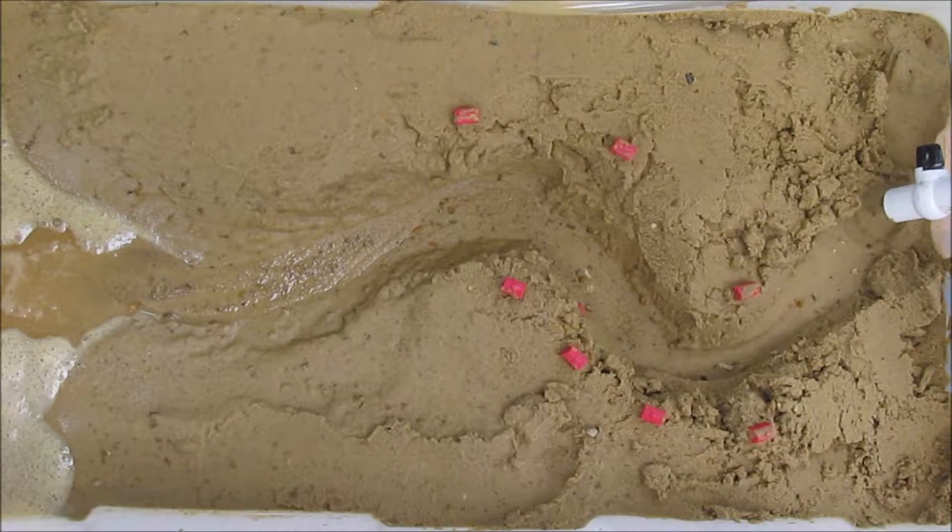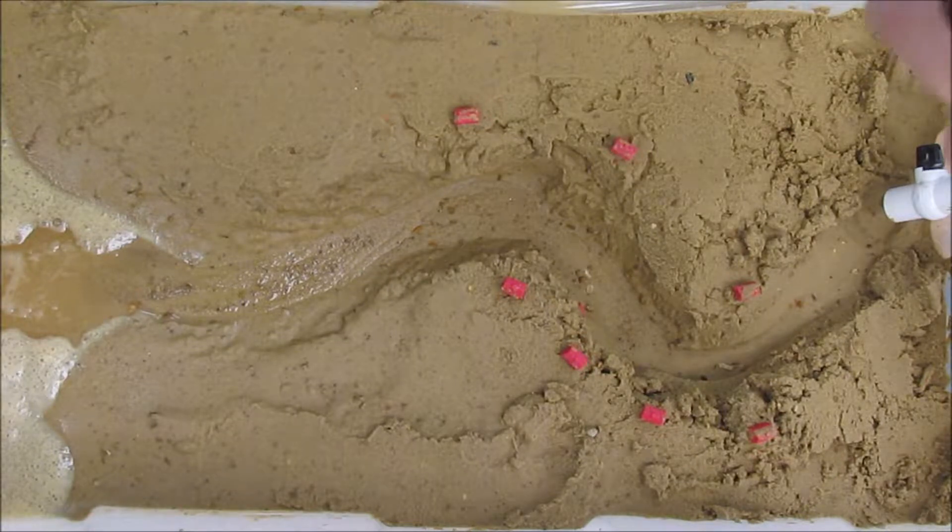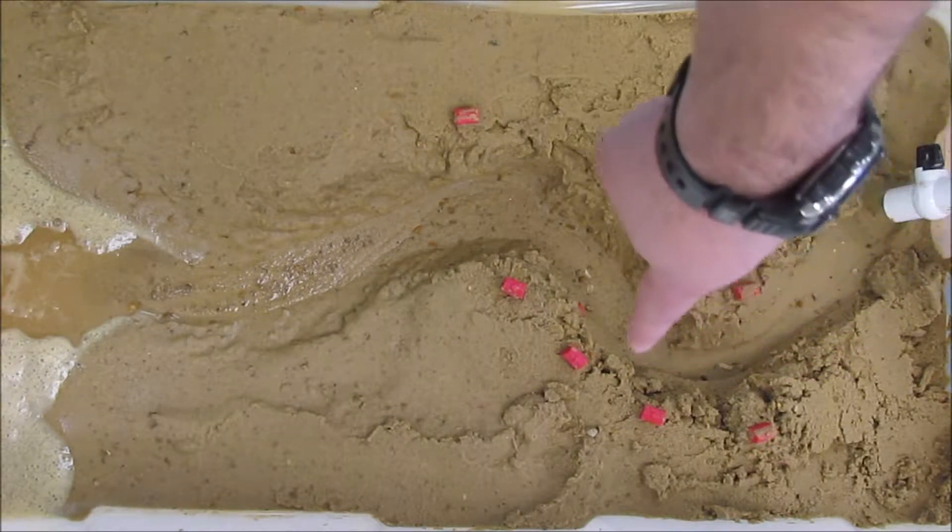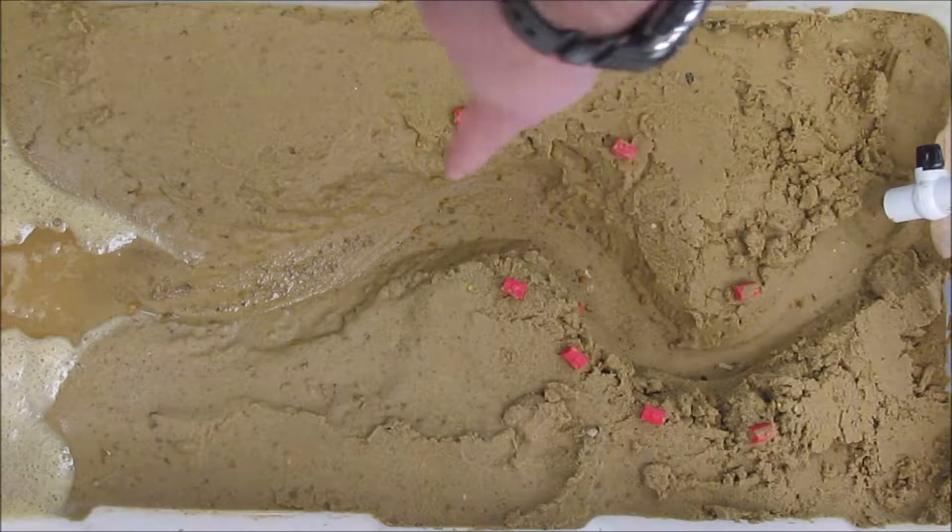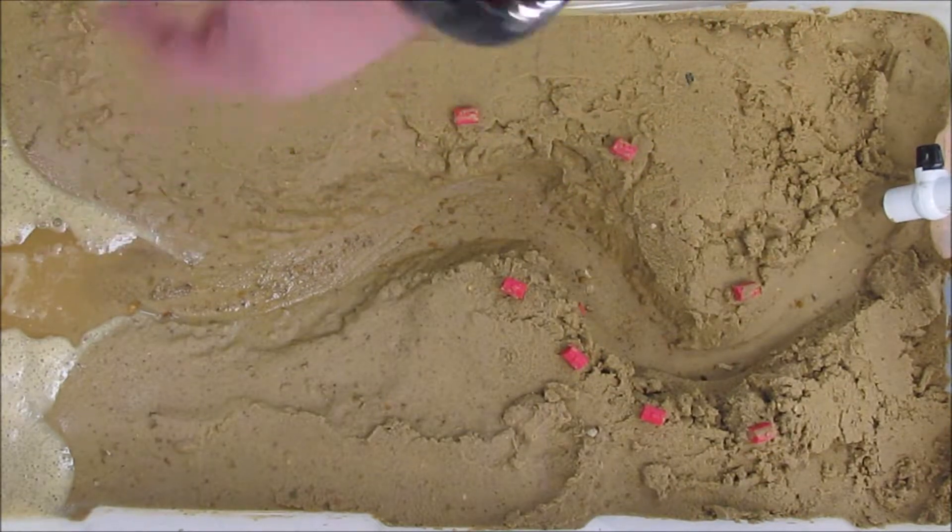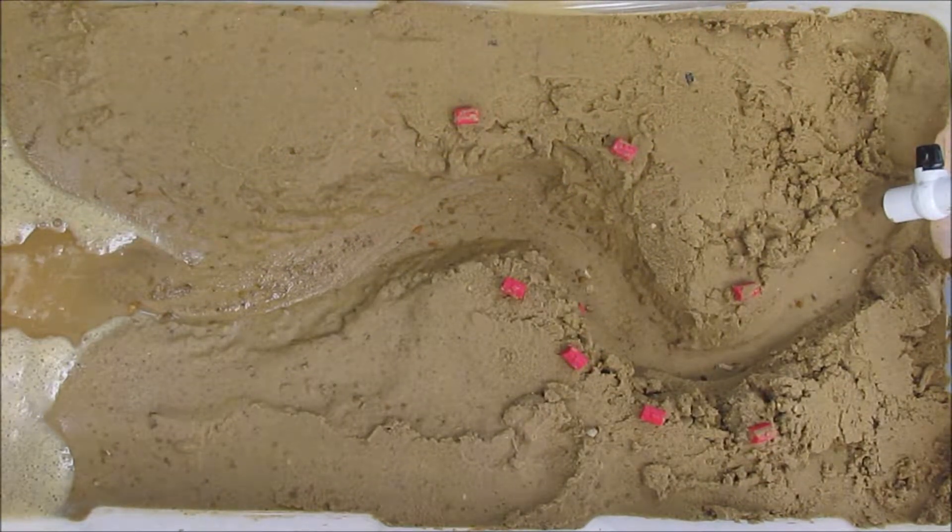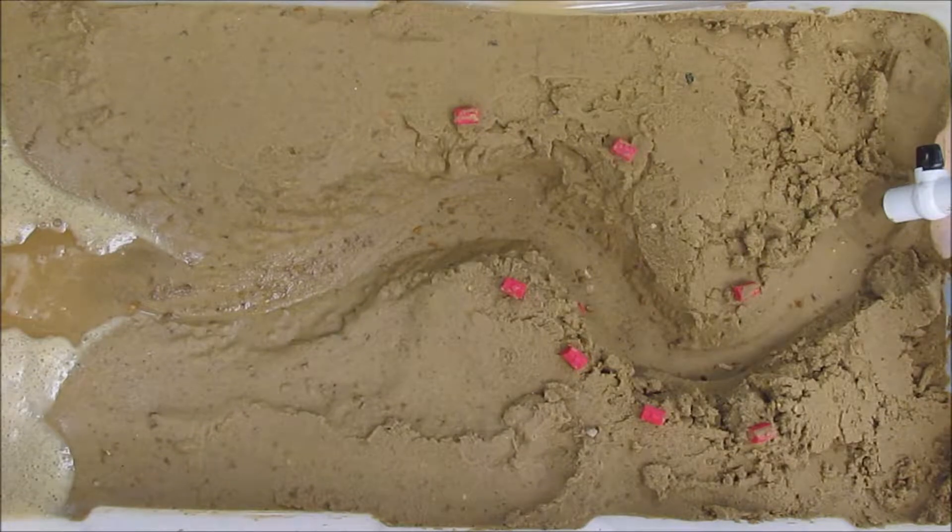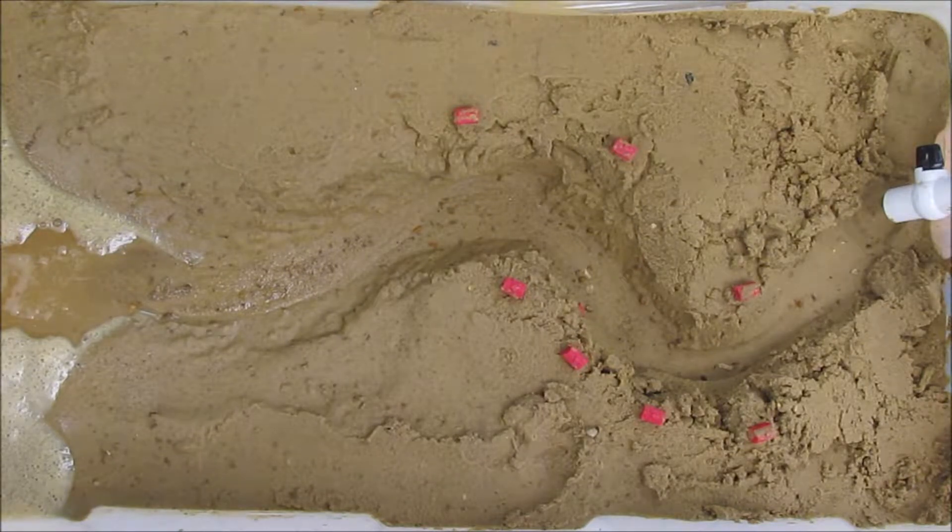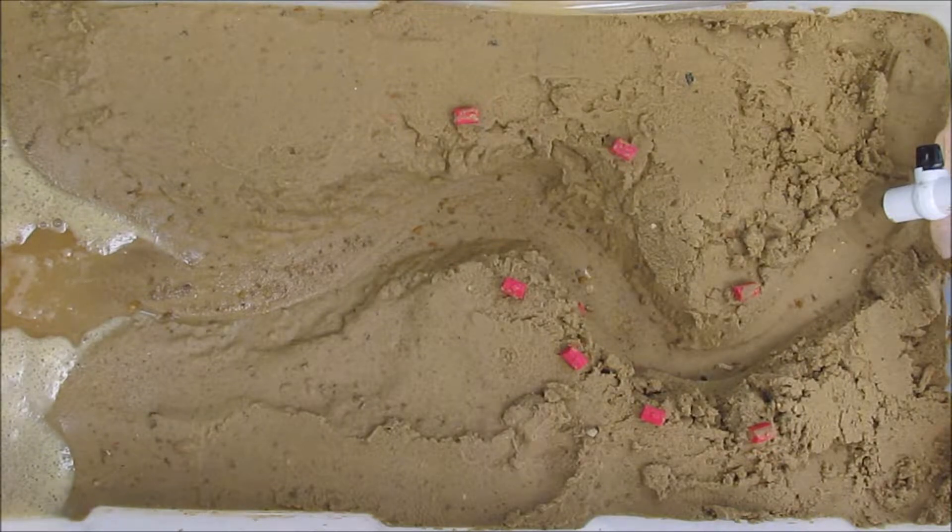Each bend or curve is called a meander. So you see our stream model here has one and two meanders emptying out into the reservoir at the bottom like a lake or an ocean. Meandering streams are called meandering streams because meander means to wander or move.